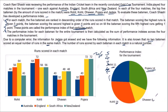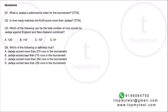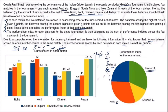Jadeja's scores from the bar graphs and pie chart are missing. The additional condition is that no two batsmen scored equal runs in the same match, and all run totals are natural numbers. The questions all pertain to Jadeja: his performance index, how many matches Kohli scored more than him, total runs against England and New Zealand combined, and which statement is definitely true.